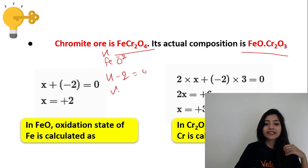X plus minus 2 equals 0, then X is equal to plus 2. So, what is the oxidation state of iron? The oxidation state of iron is plus 2.